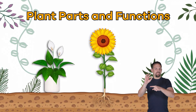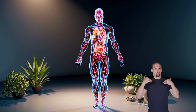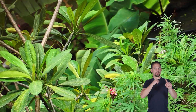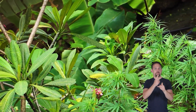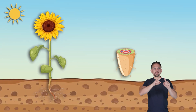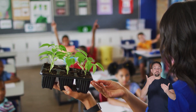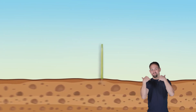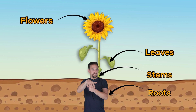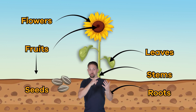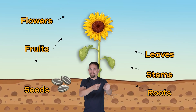Plant parts and functions. Just like the human body, plants have different parts that all work together to keep it healthy and alive. Today we are going to learn about different plant parts and their functions and ask you questions as we go. Let's dig in! The basic parts of a plant are: roots, stems, leaves, flowers, fruits, and seeds. Each part has a specific purpose and function to keep things running smoothly.